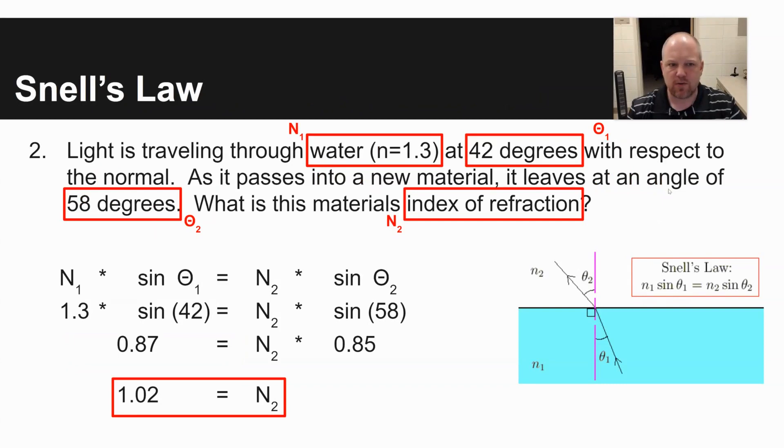The second problem I think is the most difficult here that has to do with Snell's law. It says light is traveling through water, where n is equal to 1.3. At 42 degrees with respect to the normal. As it passes into a new material, it leaves at an angle of 58 degrees. What is this material's index of refraction? So the n values, n1 and n2, they are the indices of refraction. Basically the lower this number is, the faster light travels through a substance. And so through a vacuum, n would be 1.0. So it travels at the full normal speed of light. And the bigger the n value is, the slower again light is going to travel.